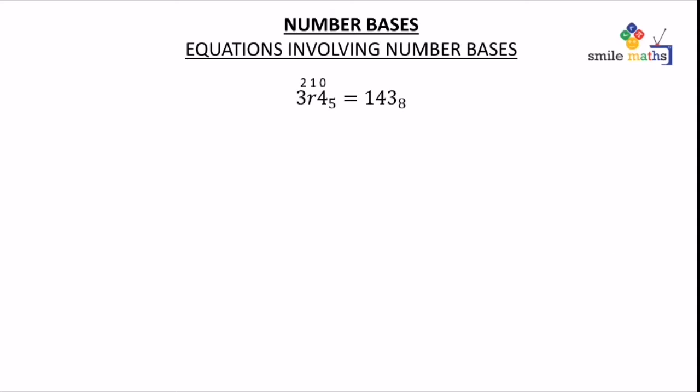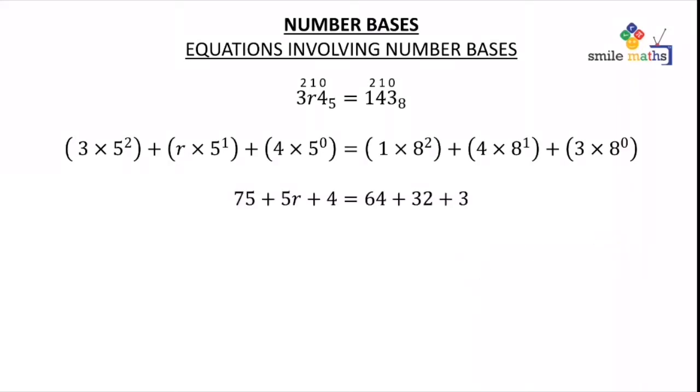For the first side we are going to label 0, 1, 2. The second side also will be labeled 0, 1, and 2. This gives us 3 times 5 to the power 2 plus r times 5 to the power 1 plus 4 times 5 to the power 0, then the other side: 1 times 8 to the power 2 plus 4 times 8 to the power 1 plus 3 times 8 to the power 0.